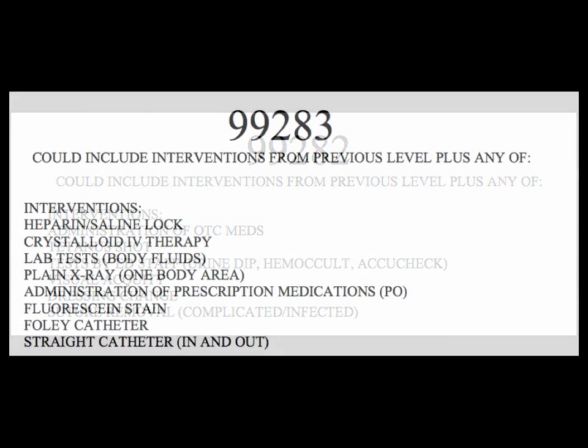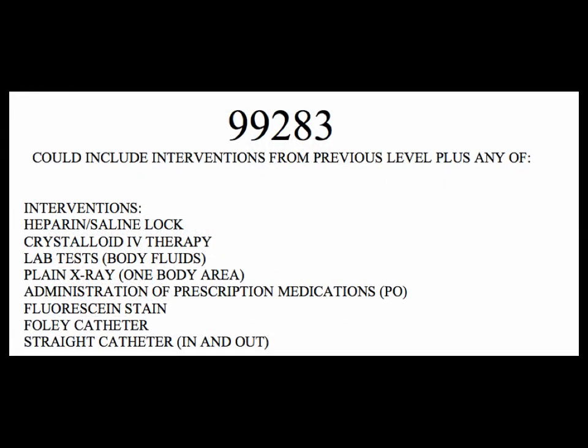Code 99283 represents a moderate complexity case. The risk of morbidity without treatment is moderate, moderate risk of mortality without treatment, uncertain prognosis, or increased probability of prolonged functional impairment. Interventions that can be included in this code include heparin lock, crystalloid IV therapy, lab tests, plain x-rays, alteration of prescription medications, fluorescein stain of the eye, Foley catheter, straight catheter, and so on.